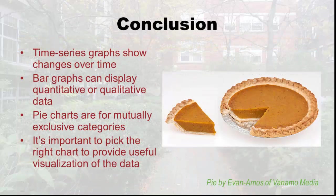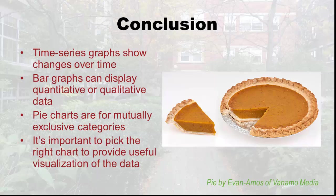In conclusion, in this lecture I first went over time series graphs and explained how they show changes over time. Then I went over bar graphs and showed how they can display quantitative and qualitative data, vertically or horizontally. Then we went through pie charts, looking at mutually exclusive categories. At the end, it's important to pick the right chart — because you want a useful visualization of your data. If you're trying to look for a distribution or trends over time, choose the right kind of graph. And now my mouth is watering, so I'm going to go eat some pie.